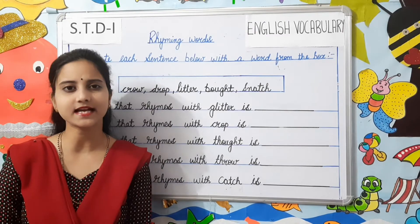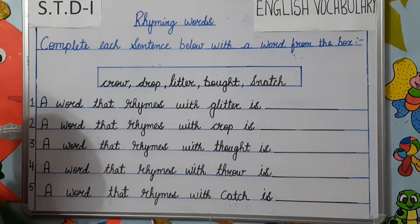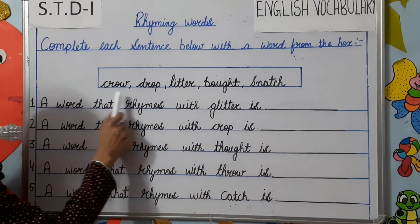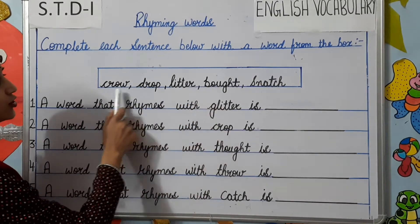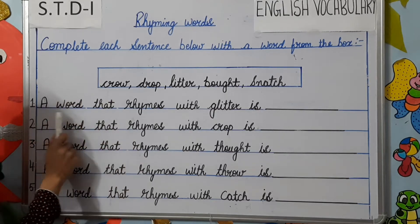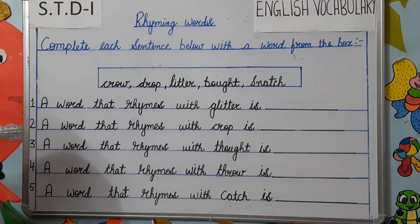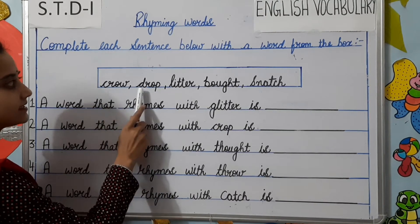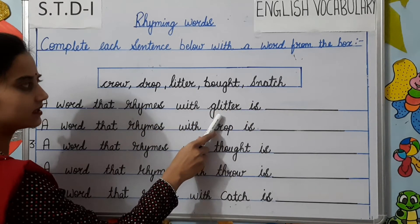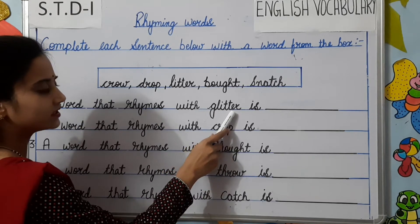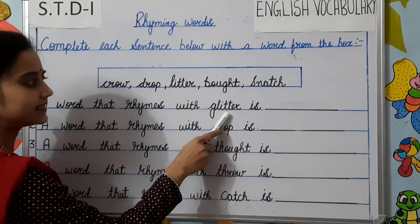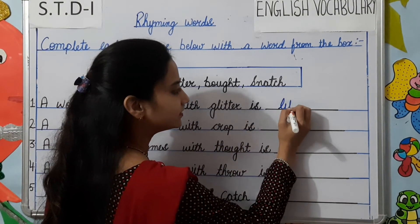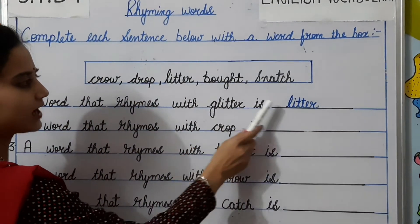Now let us do some exercises based on rhyming words. Complete each sentence below with a word from the box. You can see there is a box and few words are written. You have to choose the correct word from the box and complete the sentence. Number 1: a word that rhymes with glitter. So you need to find out the word that is rhyming with the word glitter. Glitter rhymes with litter.